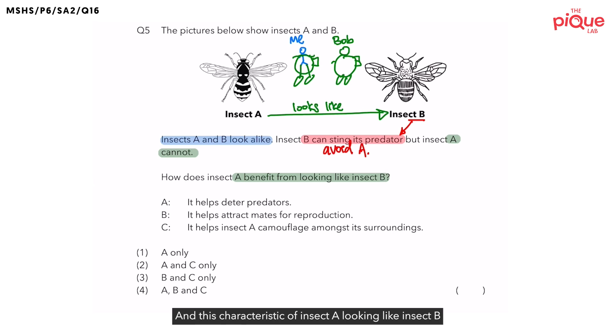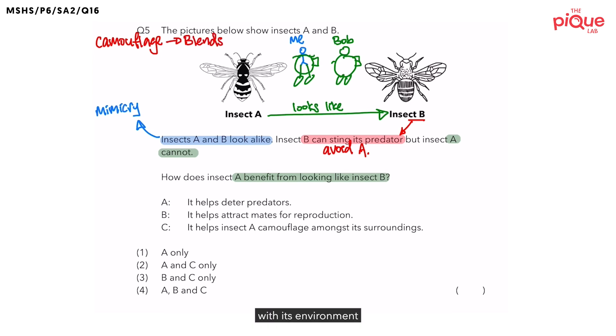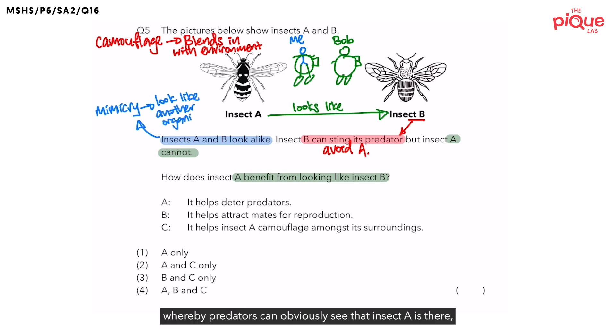And this characteristic of Insect A looking like Insect B is called mimicry. One of the things that my students usually get confused with is this term called mimicry and another term called camouflage. Camouflage is when an organism looks like or blends in with its environment in order to prevent predators from spotting them easily. While mimicry means that the organism is trying to look like another organism, just like in this question, whereby predators can obviously see that Insect A is there, but the predators will avoid eating Insect A because they think that Insect A is another organism, which is Insect B in this question, that is more dangerous.